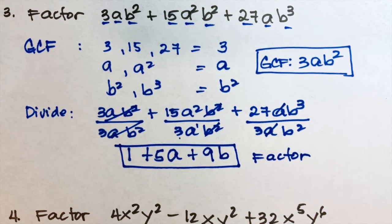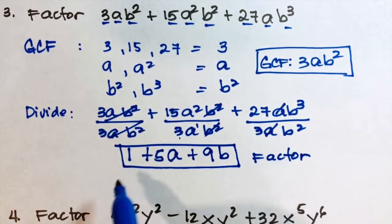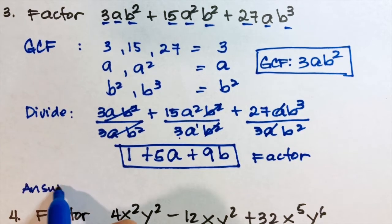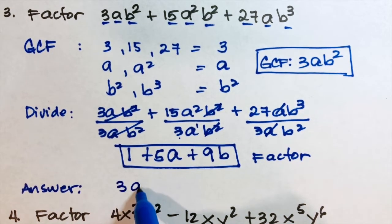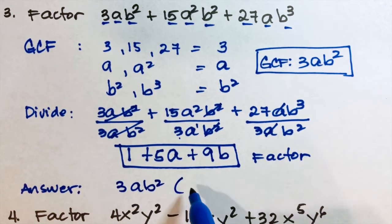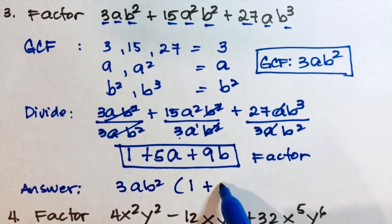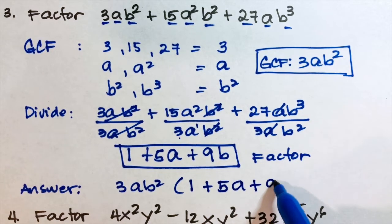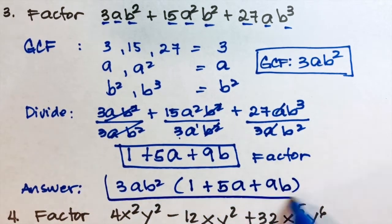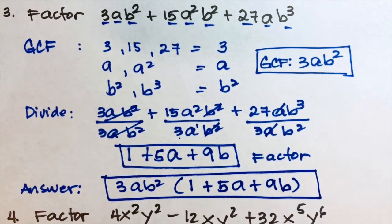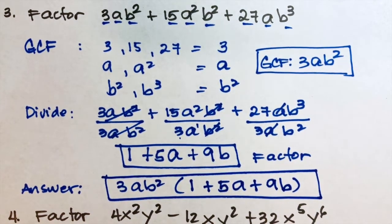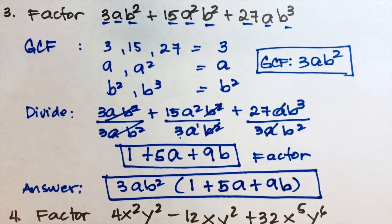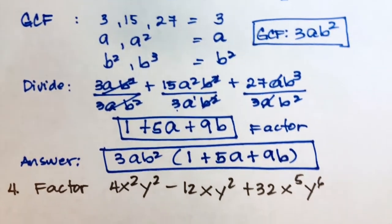The final answer is the product of the GCF and the other factor: 3ab squared times (1 plus 5a plus 9b). You can check by distributing to verify the factors of 3ab squared plus 15a squared b squared plus 27ab cubed are correct.